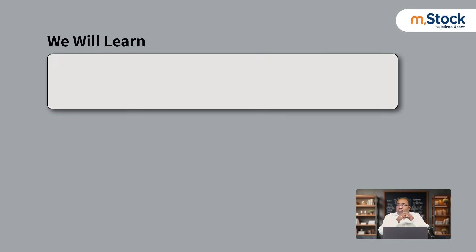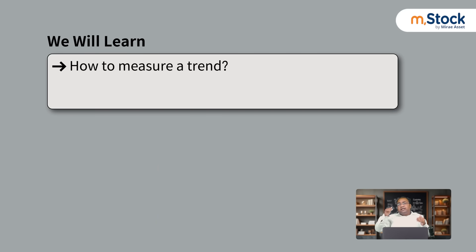Hi everyone. As we have seen in the last chapter, the market knows everything — the market factors everything. When the market is factoring, it creates a trend. But how do we measure a trend? What is the primary trend, what is the secondary trend, or what is the minor trend?